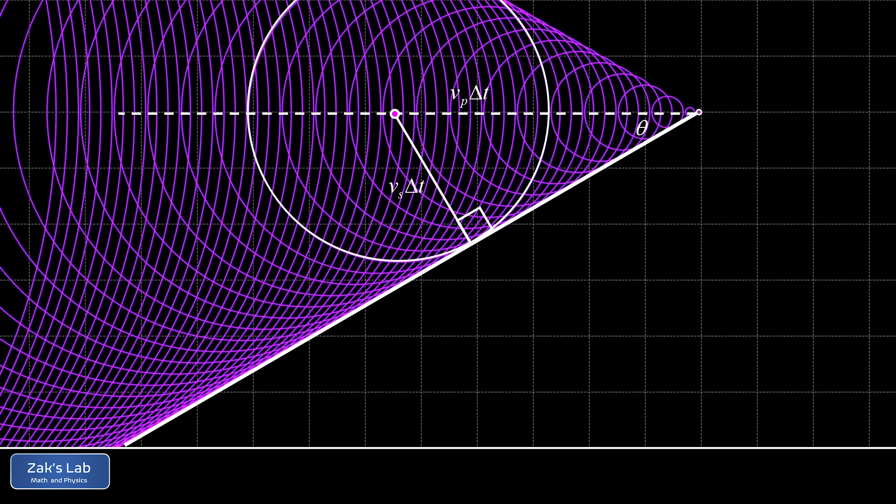So now we're looking at a right triangle where one leg is given by the speed of sound times delta t and the other leg is given by the speed of the plane times delta t. We should be able to quickly solve for the angle of the shock wave cone. So we use the sine function for this. The sine of theta is the opposite over the hypotenuse. We have the speed of sound times delta t over the speed of the plane times delta t. And of course, the delta t's are going to cancel out. We arrive at the formula sine theta is v_s over v_p, where v_s is the speed of sound and v_p is the speed of the plane.